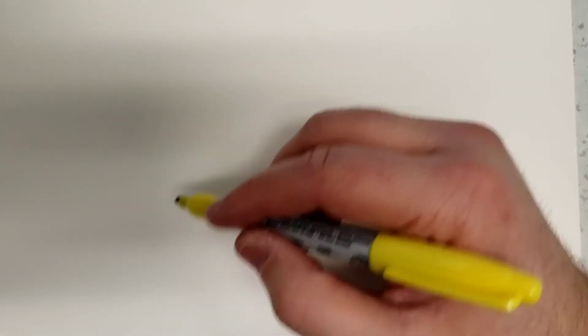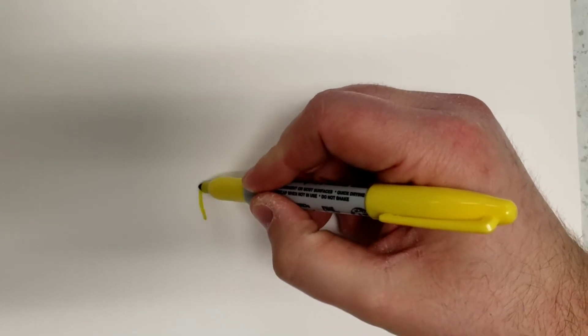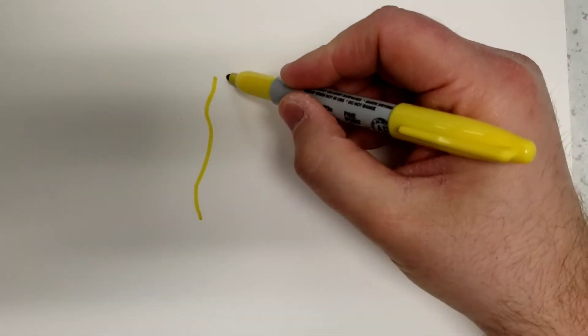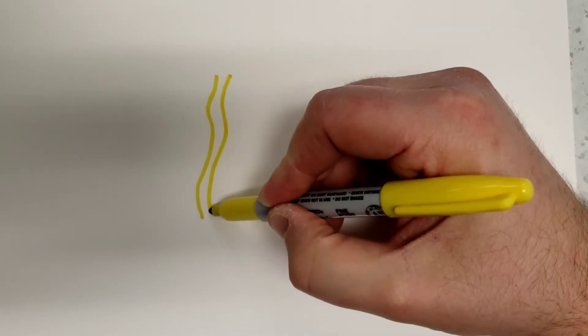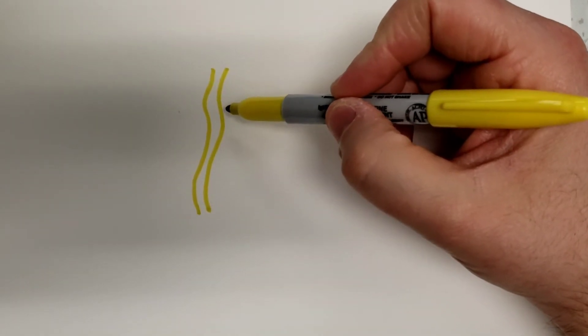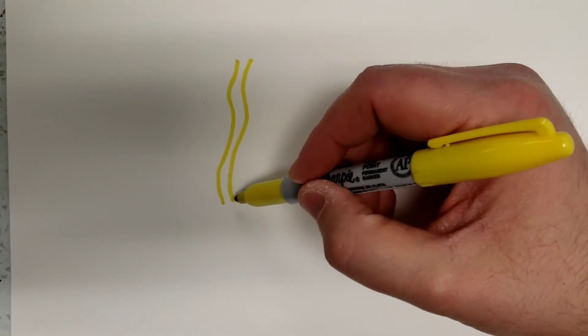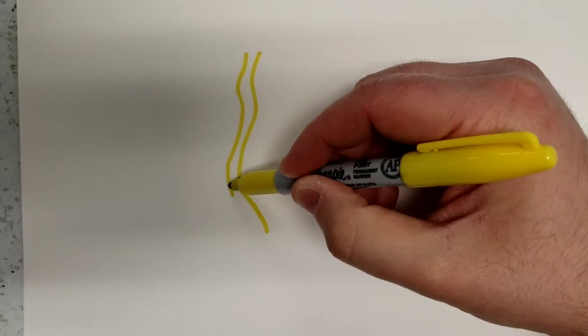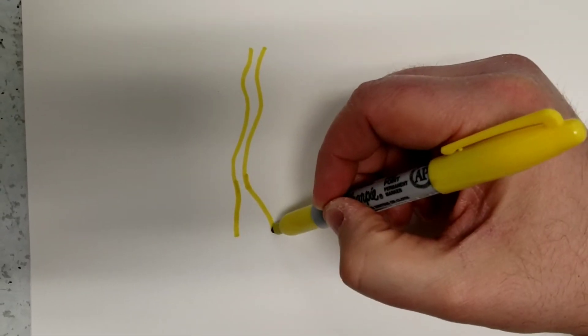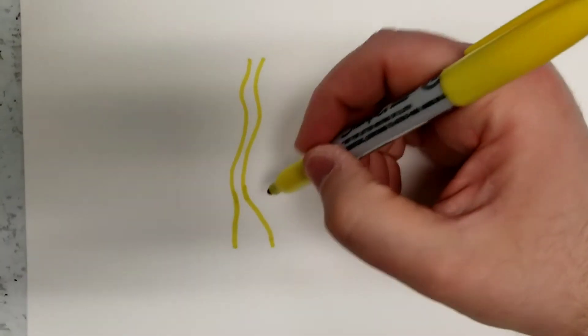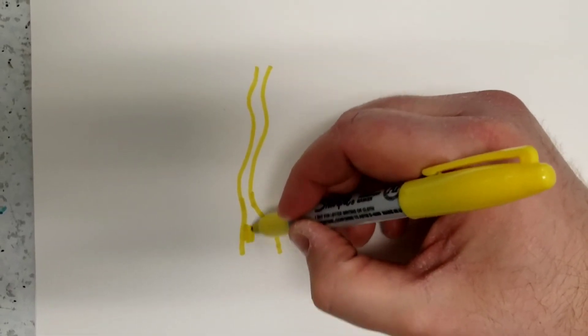Pick a point on your paper and you're going to draw a squiggly line like that, and then another squiggly line beside it. You want to make sure they're kind of close together because Truffula trees are thin. They can get a little wider on the bottom if you want to make them a little thicker, but you don't have to.